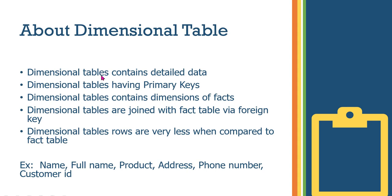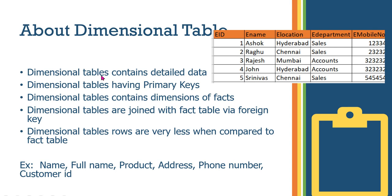Dimension tables contain detailed data. There is detailed data in dimension tables — things like first name, last name, address, mobile number, project name, and employee name. Dimension tables have a primary key.